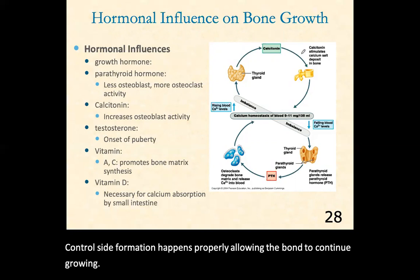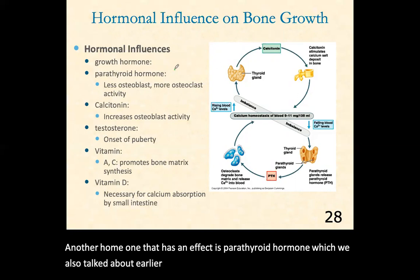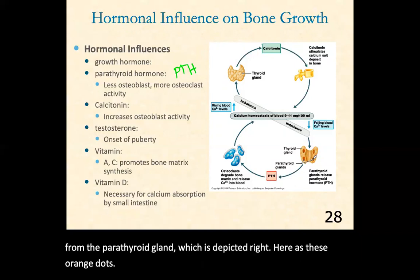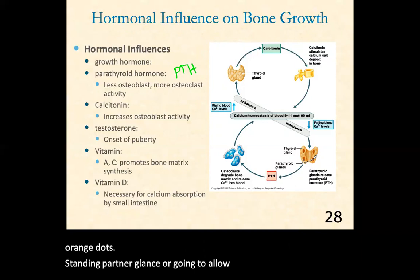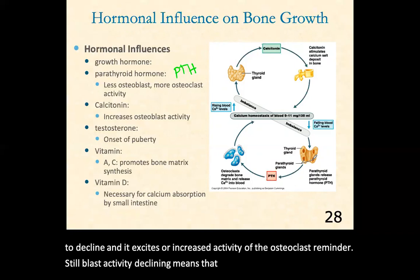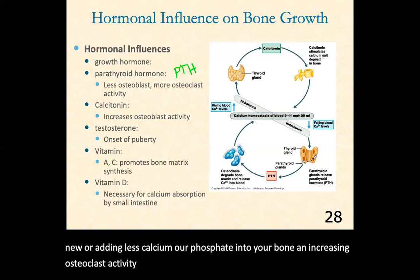Another hormone that has an effect is parathyroid hormone, also shortened to PTH, which we talked about earlier. PTH is released from the parathyroid glands, depicted here as the orange dots. The parathyroid glands cause the activity of the osteoblasts to decline and increase the activity of the osteoclasts. Declining osteoblast activity means less bone deposition — you are adding less calcium or phosphate into your bone. Increasing osteoclast activity means you are breaking down more bone and releasing calcium and phosphate into your bloodstream.